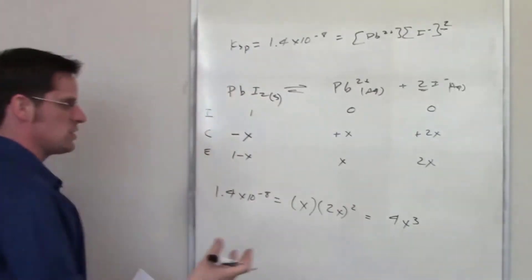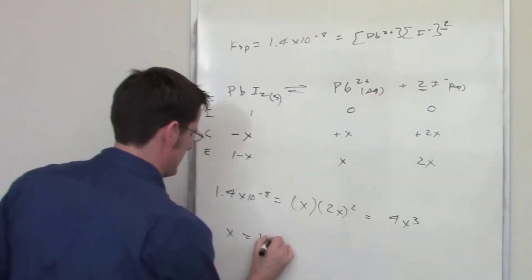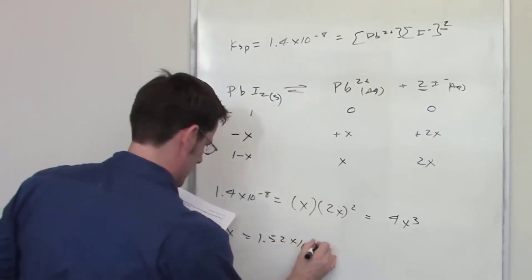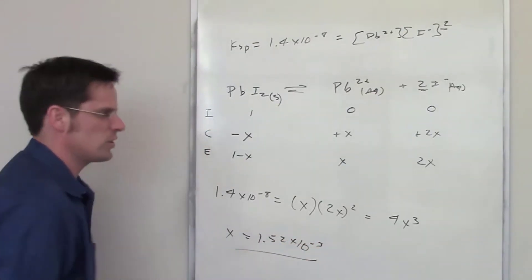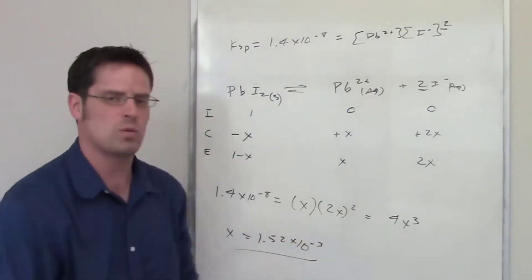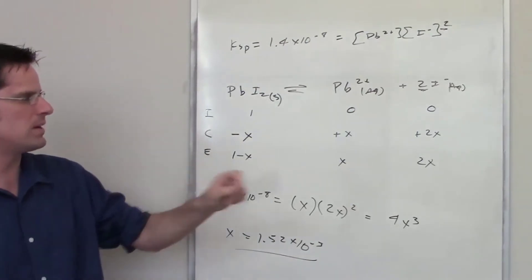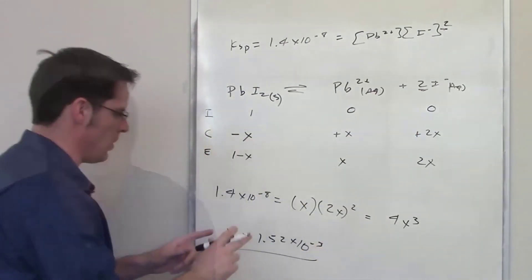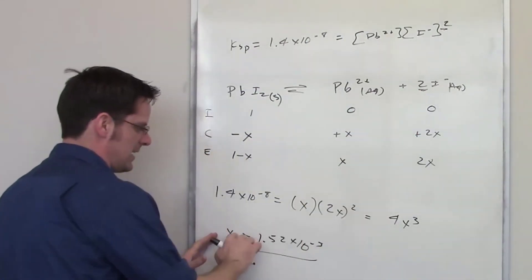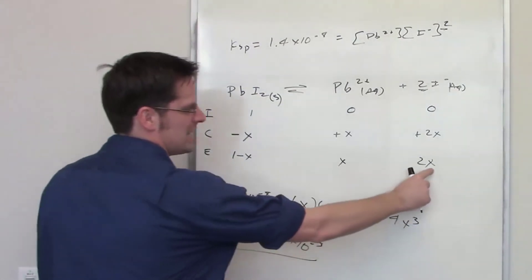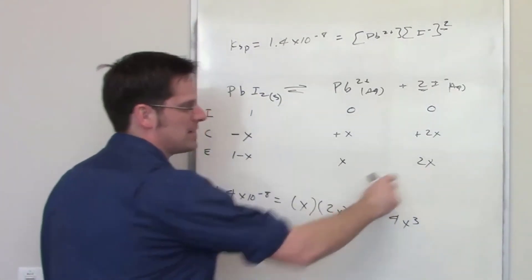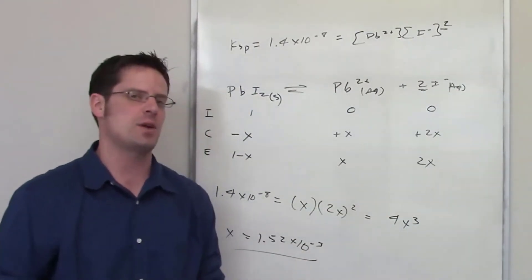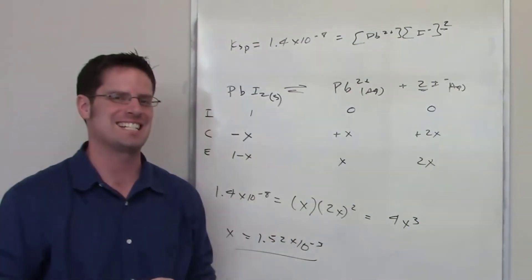Solving for x, you end up getting 1.52 times 10 to the negative 3rd. However, this is not the answer to the question, because the question asks for the final equilibrium concentration of iodide I⁻. So you take x, multiply it by 2, and that gives the final iodide concentration at equilibrium.